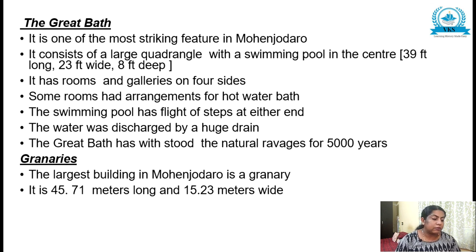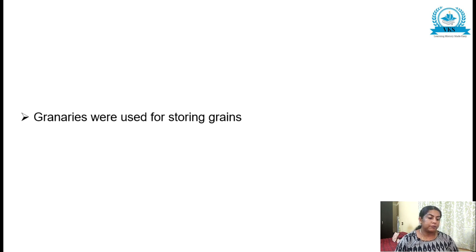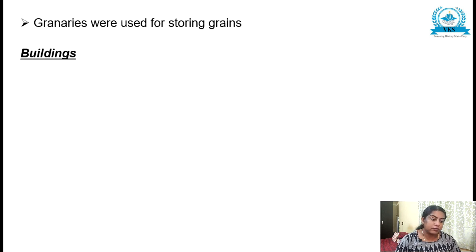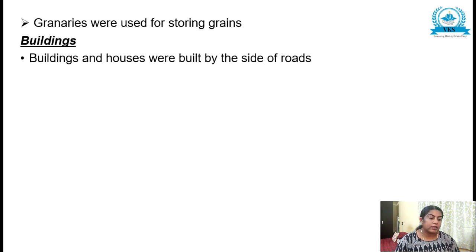Next, granaries — the largest building in Mohenjo-daro is a granary; it is 40.25 to 71 meters long and 15.23 meters wide. Brick platforms forming the base for granaries have been found in Harappa and the southern part of Kalibangan. Granaries were used for storing grains.